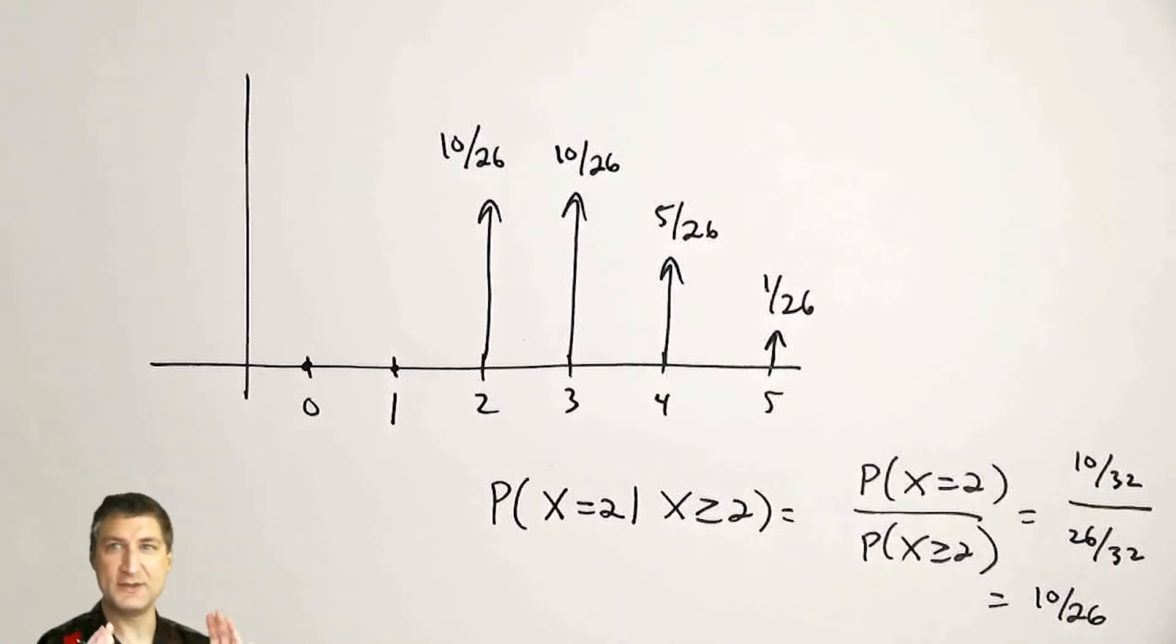So here, this is still a PMF. It satisfies all the properties we had before. For example, all of the values have to add up to one. And it's kind of like the before and after. So I've shifted the probability mass around, given this new information about the event.